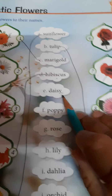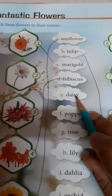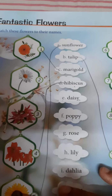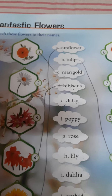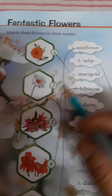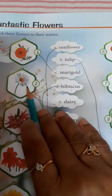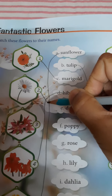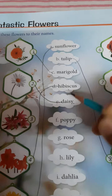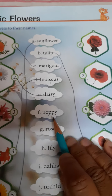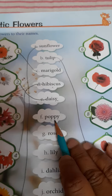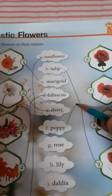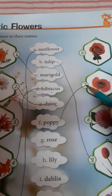Next is daisy. Which one is daisy? This one is daisy. So you match the flower to their name. Next is poppy. Here is poppy. So you join the flower name with the flower — this is poppy.